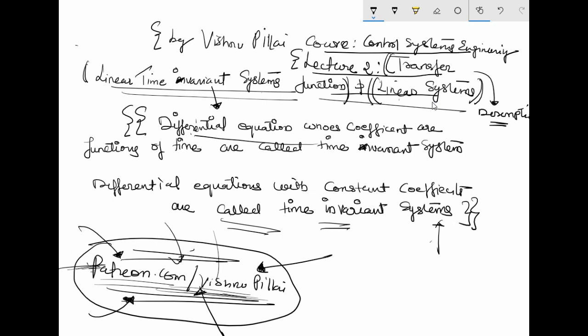A linear time invariant system or a linear time varying system — this is the first kind of system I will talk about before going into how to derive the transfer function, which will be used later in lectures 3 and 4 to solve block diagrams and modeling of control systems.